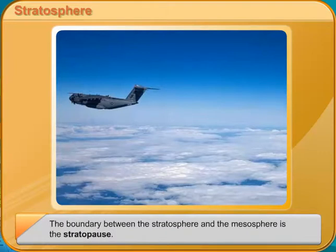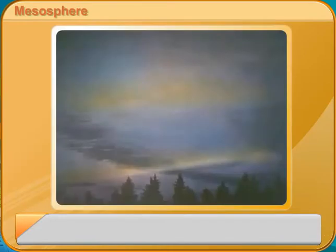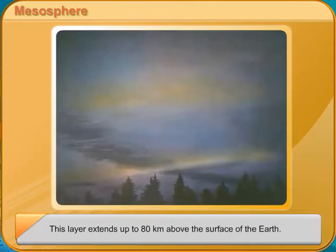The ionosphere extends from 80 km to 500 km above the surface of the Earth. This layer contains electrically charged particles called ions, which help in transmitting communication signals like radio waves.